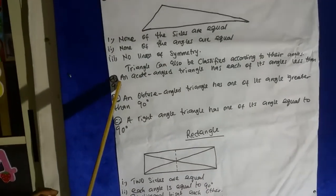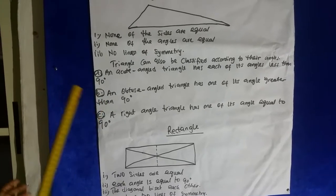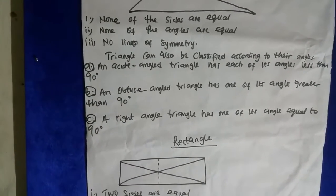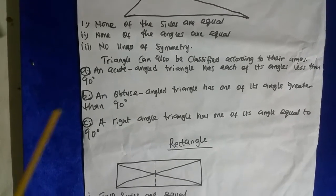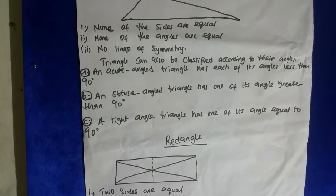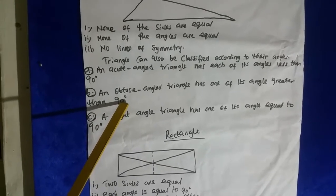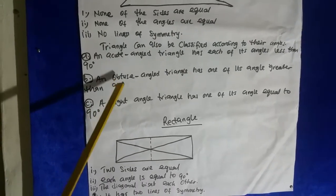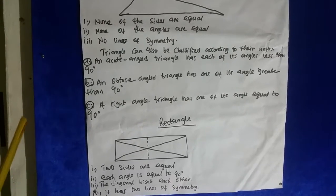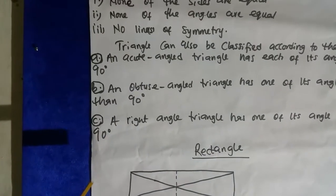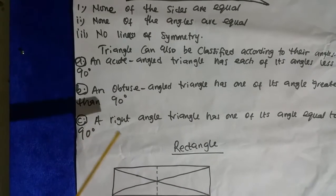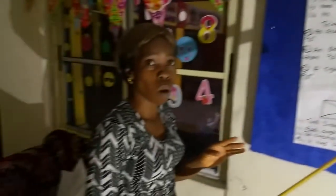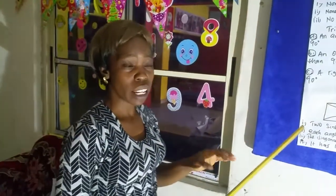Every angle in an acute triangle is less than 90° — it may be 60°, 45°, or 25°. An obtuse angle triangle has one of its angles greater than 90° — it may be 100°, 120°, or 150°. A right angle triangle has one of its angles equal to 90°.